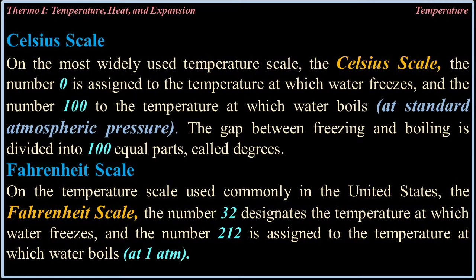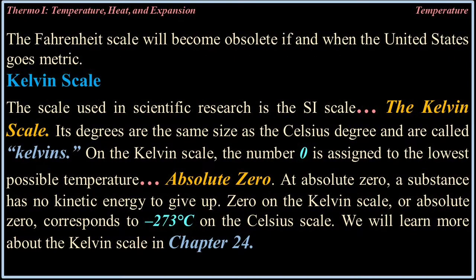Celsius scale: On the most widely used temperature scale, the Celsius scale, the number 0 is assigned to the temperature at which water freezes, and the number 100 to the temperature at which water boils at standard atmospheric pressure. The gap between freezing and boiling is divided into 100 equal parts called degrees. Fahrenheit scale: On the temperature scale used commonly in the United States, the Fahrenheit scale, the number 32 designates the temperature at which water freezes, and the number 212 is assigned to the temperature at which water boils at one atmosphere. The Fahrenheit scale will become obsolete if and when the United States goes metric.